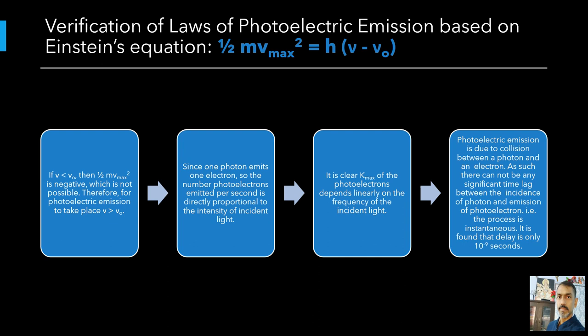This explains why photoelectric current is proportional to intensity. According to Einstein's equation, k max depends linearly on nu and is independent of intensity of radiation, in agreement with observation.